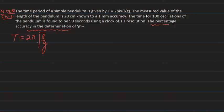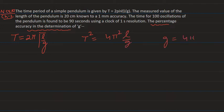First, we find the relationship: T = 2π√(L/g). We square both sides to get T² = 4π²L/g. From here, g is equal to 4π²L divided by T².